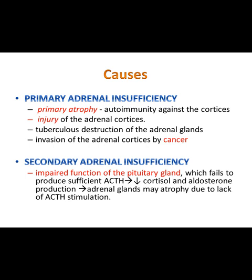Secondary adrenal insufficiency means that there is impaired function of the pituitary gland. The problem does not lie in the adrenal gland or the cortex itself, but at a higher level. There might be impaired function of the pituitary gland which fails to produce sufficient adrenocorticotropic hormone (ACTH). When there is insufficient ACTH production, the production of cortisol and aldosterone will also be insufficient, and the adrenal glands may atrophy due to the lack of ACTH stimulation.